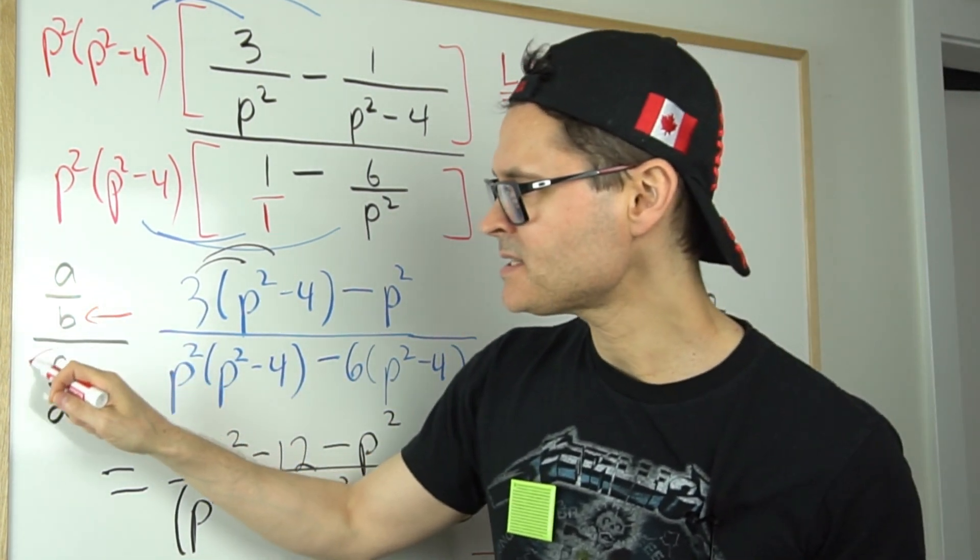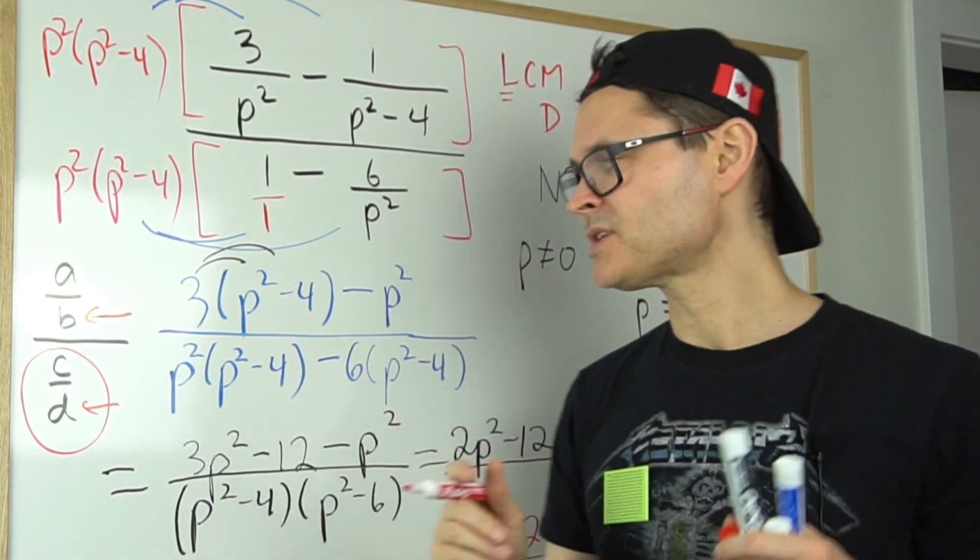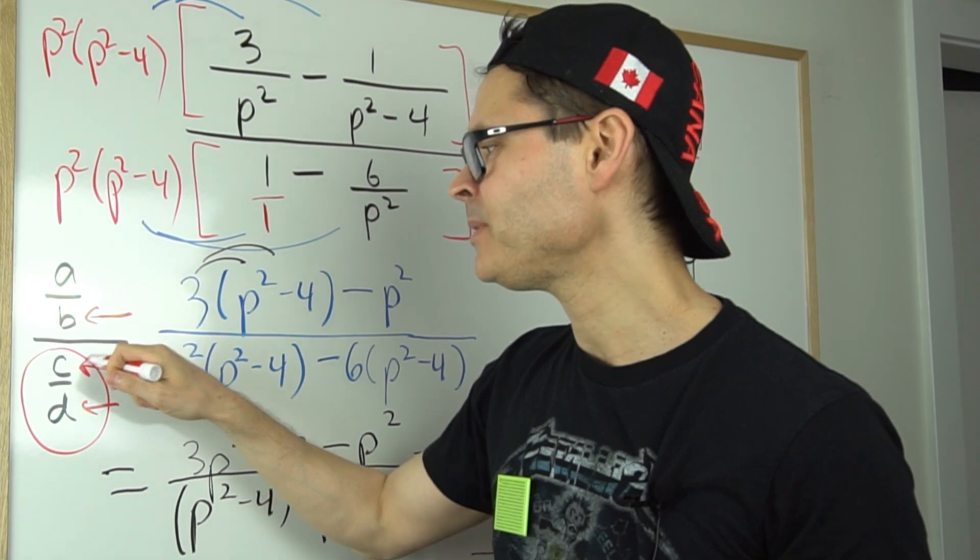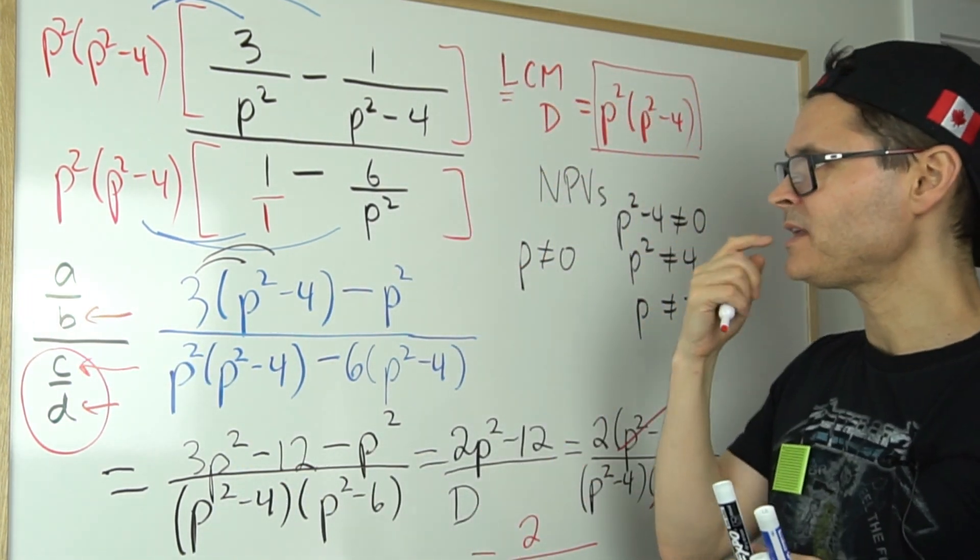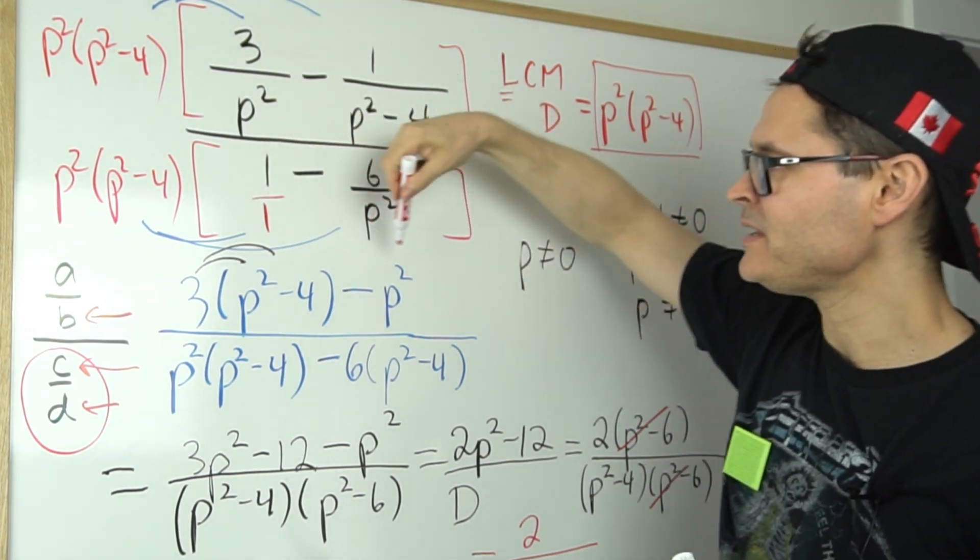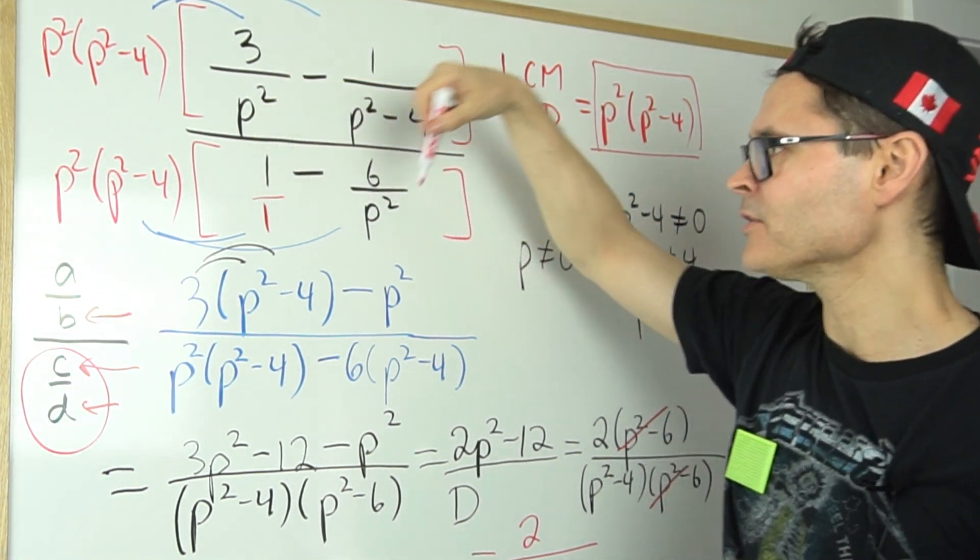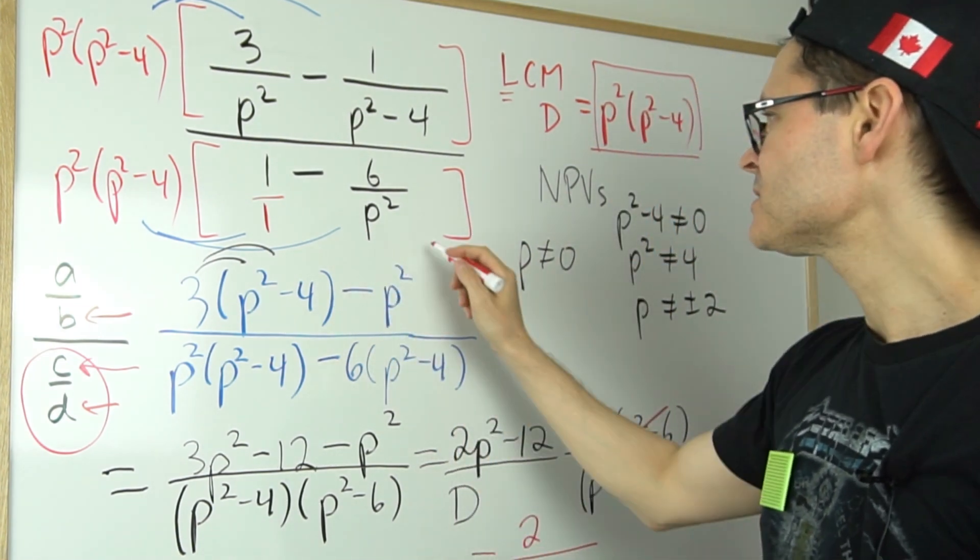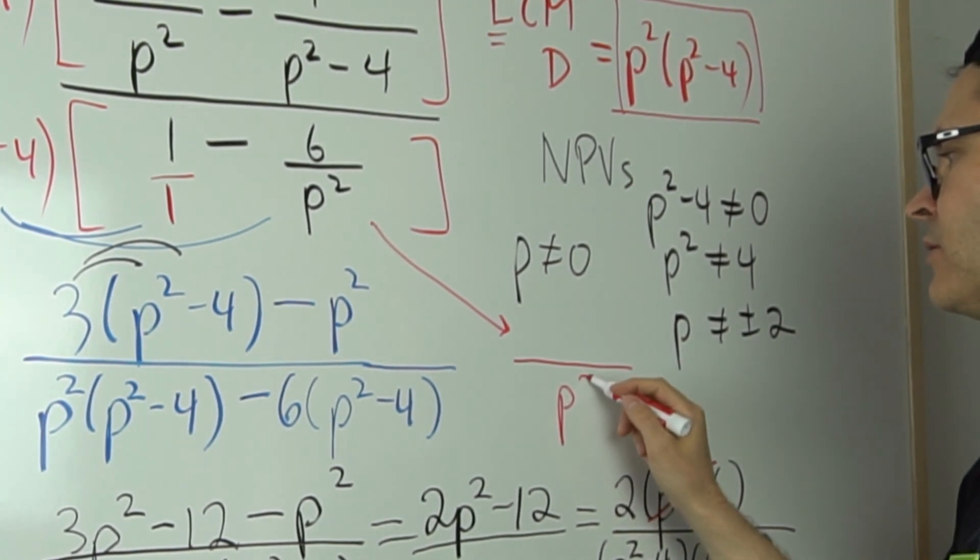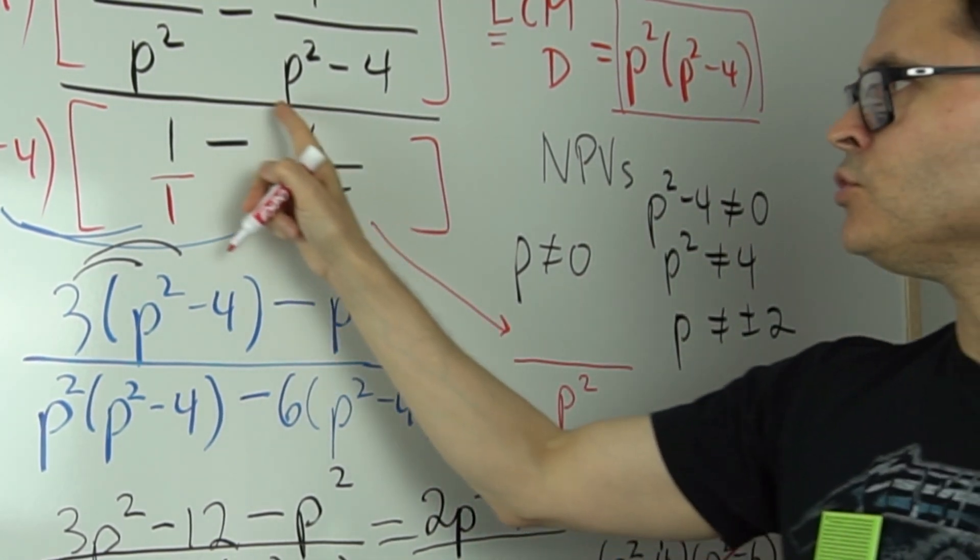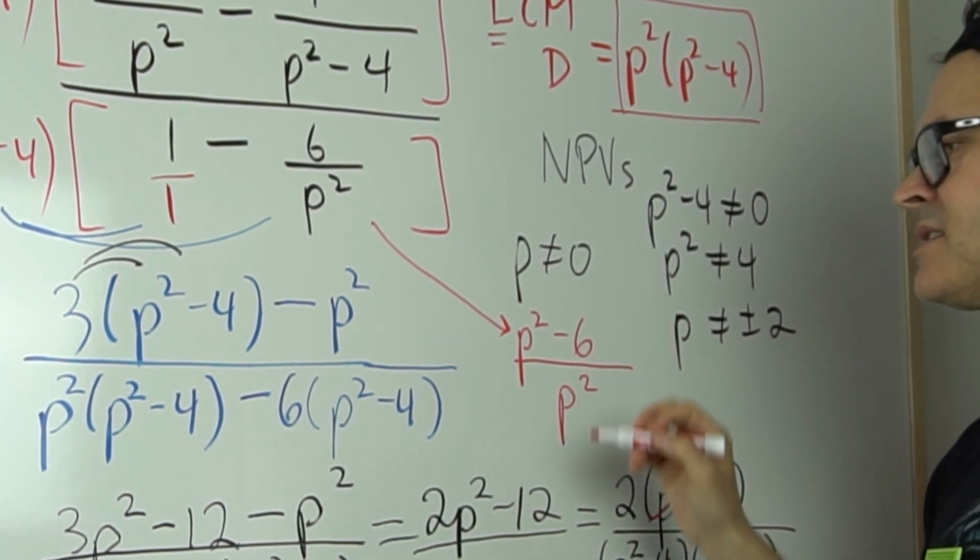Okay, so what I'm going to be careful with here is if I was to add these together—if I was to add the denominator together, do you see what would end up happening? I'll just write it here. The denominator would be p squared, but the numerator of that would be p squared minus six.